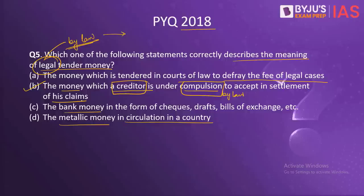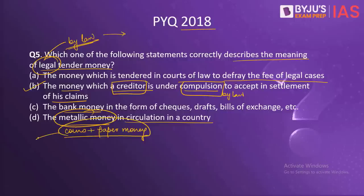Checks, drafts, or bills of exchange are not legal tender because they can be refused as a mode of payment or settlement by any party. The national currency, including metallic money (coins) and paper money (notes), is recognized as legal tender in the country. For example, the Rupee is a legal tender of India.